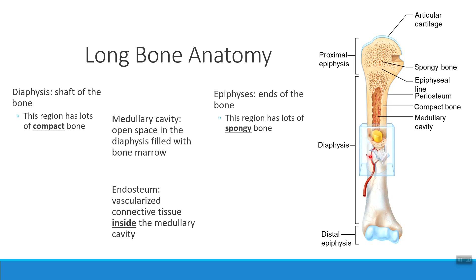Covering the inside of the medullary cavity, in the middle of the diaphysis of the bone, we have a connective tissue layer called the endosteum. 'Endo' means inside; 'osteum' means bone. The endosteum is a connective tissue layer that lines the very middle of the medullary cavity. It has a lot of blood supply, helping the bone tissue along the medullary cavity to get the oxygen and nutrients it needs.